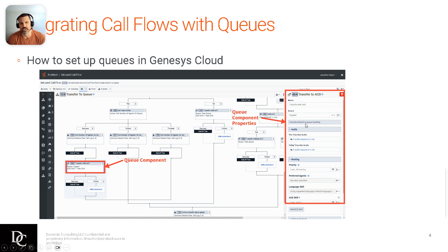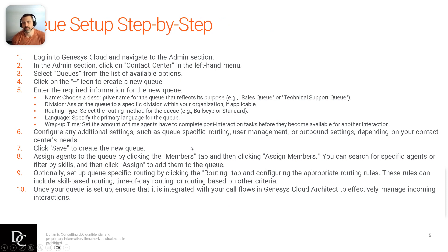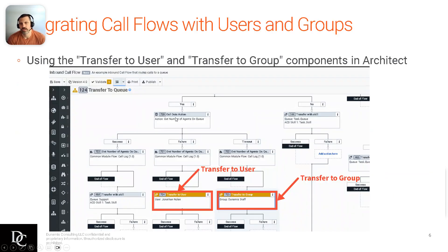Also in queue activity, there's an override option called 'override default in-queue activity handling.' If you create a different in-queue flow, you can use a dropdown to set that. You can set pre-transfer and failed transfer audio, and also set priority — in this case, calling a task from a previous step to get the priority, while calling the skill language skills and defaulting to English for this particular call flow with no preferred agents. The queue setup step-by-step is included here for your reference, and will be covered in a hands-on exercise.